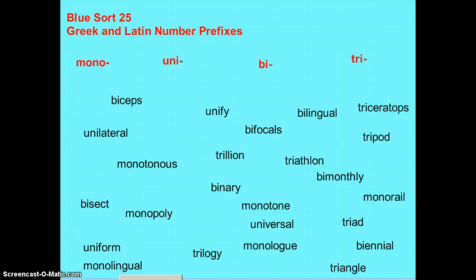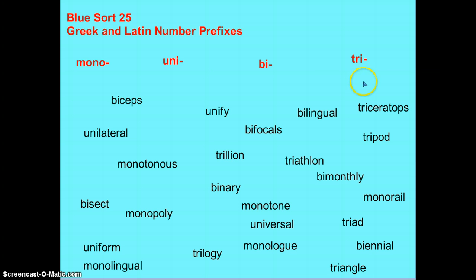Blue Sort 25: Greek and Latin Number Prefixes. This week we will be introducing the Greek prefix mono, which means one, and uni, which also means one, bi, which means two, and tri, which means three.